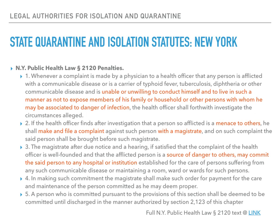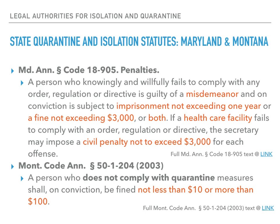What about the penalties associated with public health laws? Again, you'll find variants across states. Looking at New York's health laws, there's a separate statute for penalties providing grounds for investigation, a subsequent court appearance if determined necessary by the health officer, and institutionalization if the judge deems the individual a source of danger to others. Maryland and Montana have more specific penalty codes — between $10 and $100 for quarantine non-compliance in Montana, versus a fine up to $3,000 in Maryland, which may also include being charged with a misdemeanor and imprisonment of up to a year.